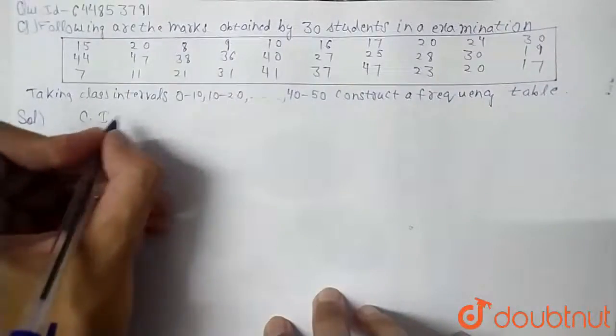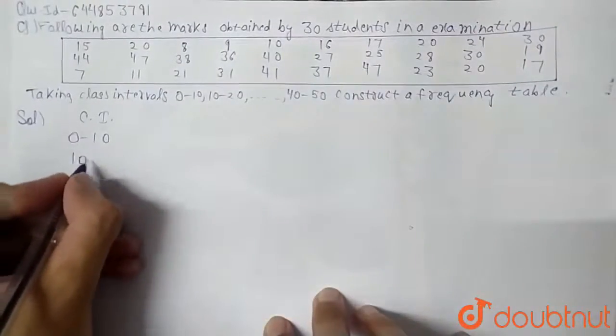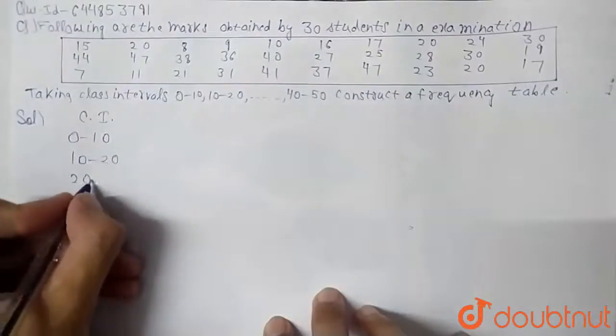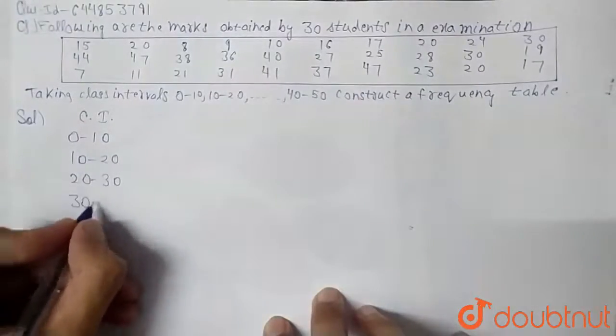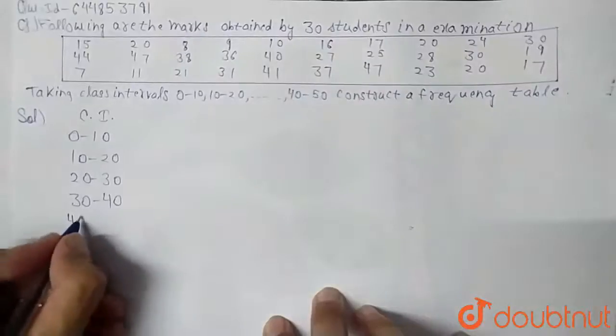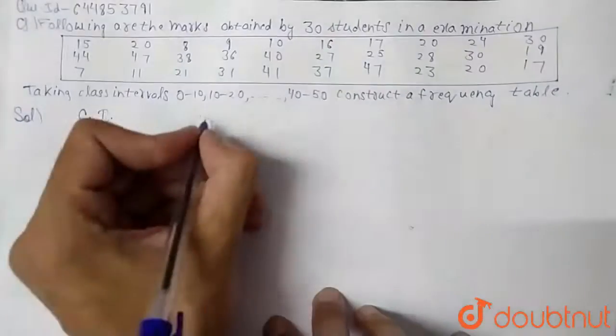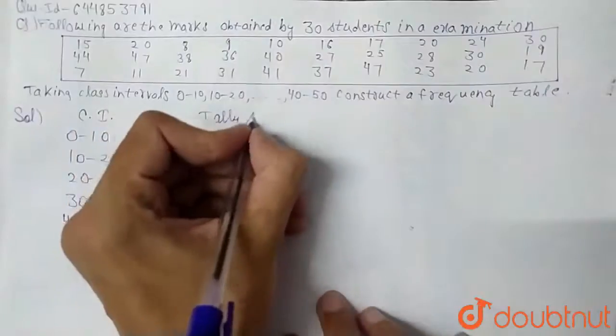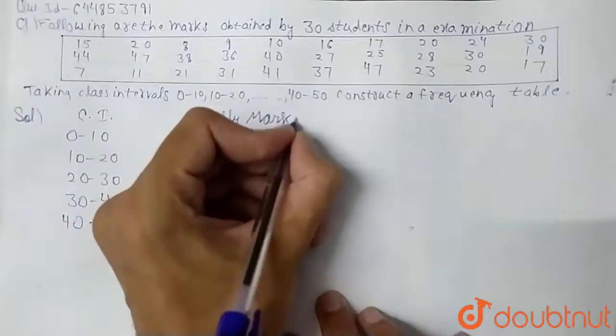Class interval from 0 to 10, then 10 to 20, then 20 to 30, then 30 to 40 and 40 to 50.